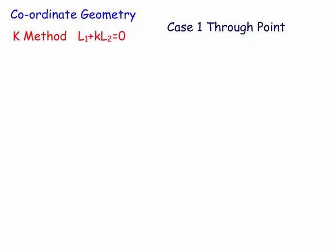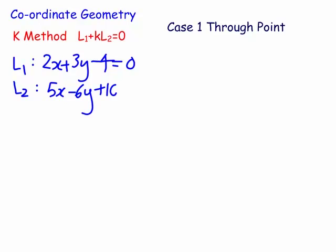Welcome back. The first case is going through a point. The first thing we need is the equations of the lines. Line 1 is 2x plus 3y minus 4 equals zero, and line 2 is 5x minus 6y plus 10 equals zero. We want the equation of another line through the intersection of these two lines, but also through another point, which will be (1, 2).